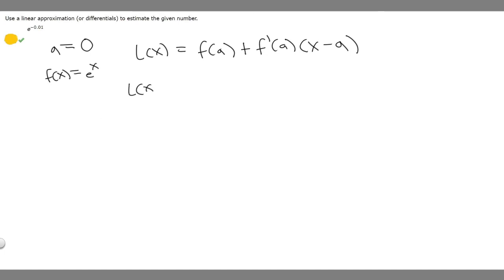Now what we can do is solve. f(a) is just going to be our function with respect to a. Our function is e^x. Instead of x we put a, which is zero. So e^0.